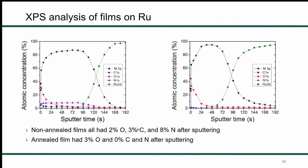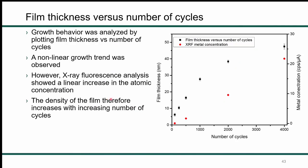Now that we have an XPS on site, our next step is to do a quick deposition and immediately run downstairs to get XPS on it, to minimize the oxygen content. For a typical ALD process, the relationship between film thickness and number of cycles is linear, but in my case I was not getting a linear relationship — the growth rate drops off dramatically with longer run times. However, analyzing the films by X-ray fluorescence, I did see a linear increase in metal concentration. What we're actually seeing is that the film is densifying with longer run times — we think it's a self-annealing process as it loses nitrogen and decomposes to metal.